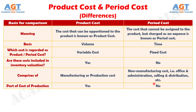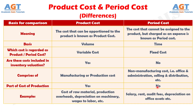Number 6: product cost is a part of cost of production, but period cost is not a part of cost of production. And difference number 7: examples of product cost include cost of raw material, production overheads, depreciation on machinery, wages to labor, etc.